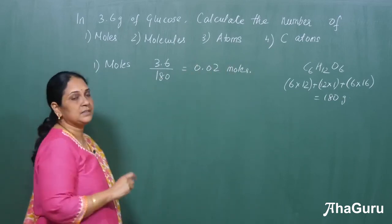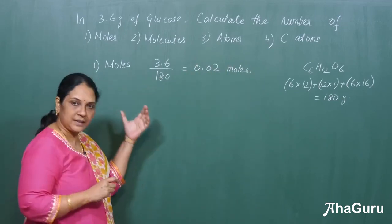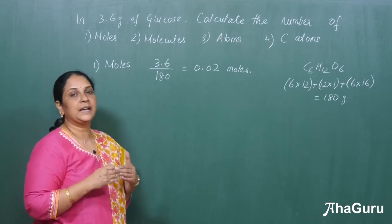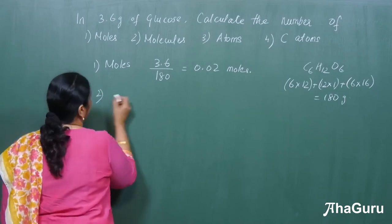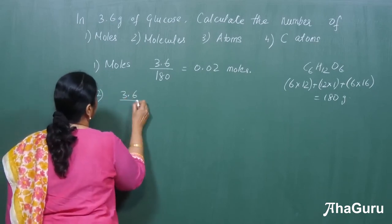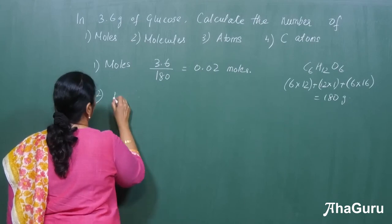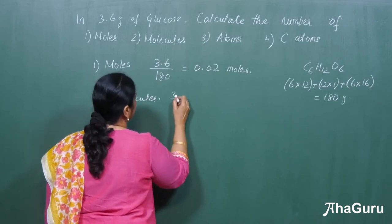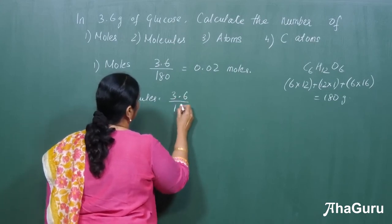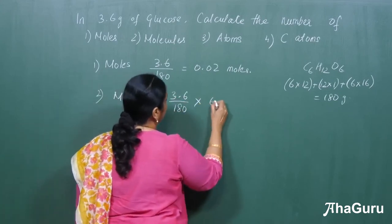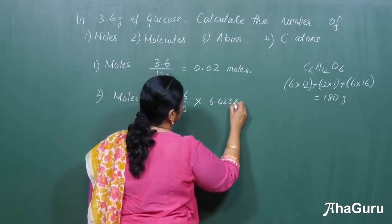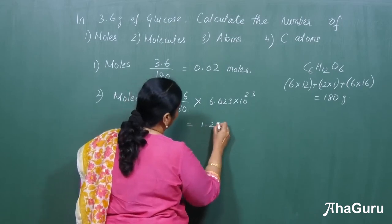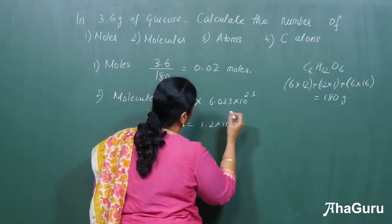Now the second step is to calculate the number of molecules. Take the given weight divided by molecular weight and multiply by Avogadro's number. So 3.6 divided by 180 multiplied by 6.023 × 10²³ gives you 1.2 × 10²² molecules.